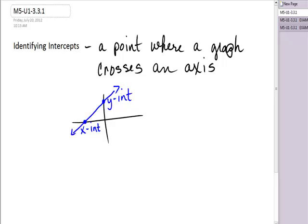This is true even if the graph is not a line. Let's suppose I have something called an ellipse. This particular graph has two x-intercepts and it has two y-intercepts, something that I hope you'll notice about intercepts. Of course, they're on the axis.